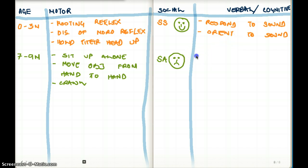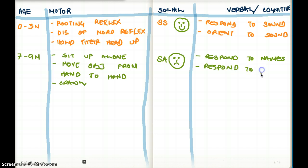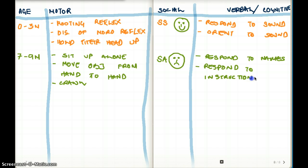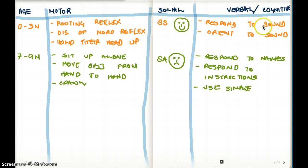Verbally and cognitively, from seven to nine months they're still going to respond to sound, but now to specific sounds — they're going to respond to their names. They're also going to respond to simple instructions. And third, they will be able to use simple gestures. They won't be able to talk yet, but they will respond — that's the cognitive development coming in at this stage.